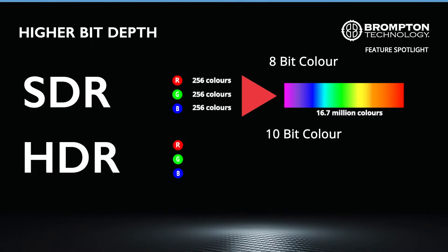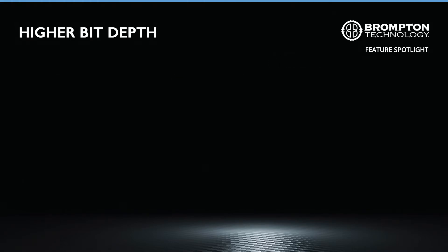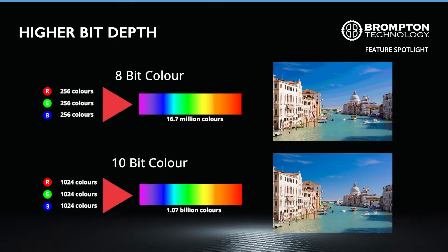By contrast, the HDR standard recommends using at least 10-bit colour. This gives each of the RGB primary colour channels a minimum of 1024 possible brightness levels — that is 4 times as many levels than offered by 8-bit colour. When put together, this produces 1 billion different colours to describe each pixel. The big advantage of this is the ability to show much smoother colour gradients and transitions, with less banding occurring.